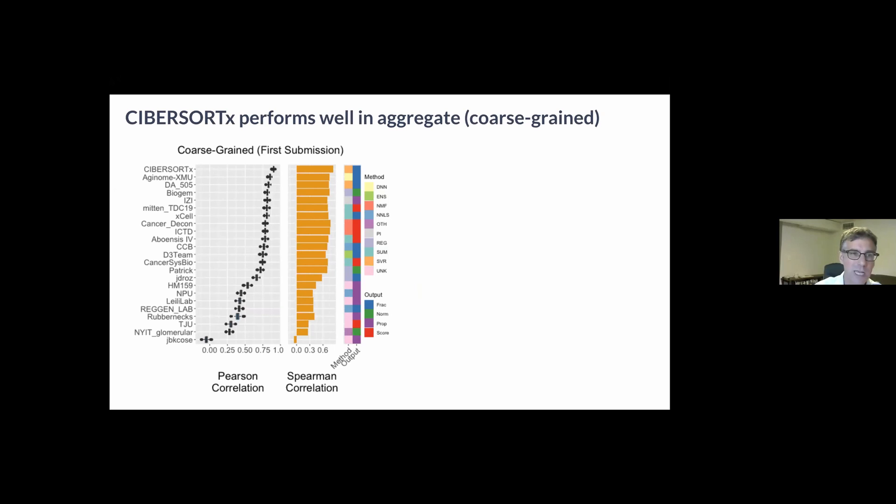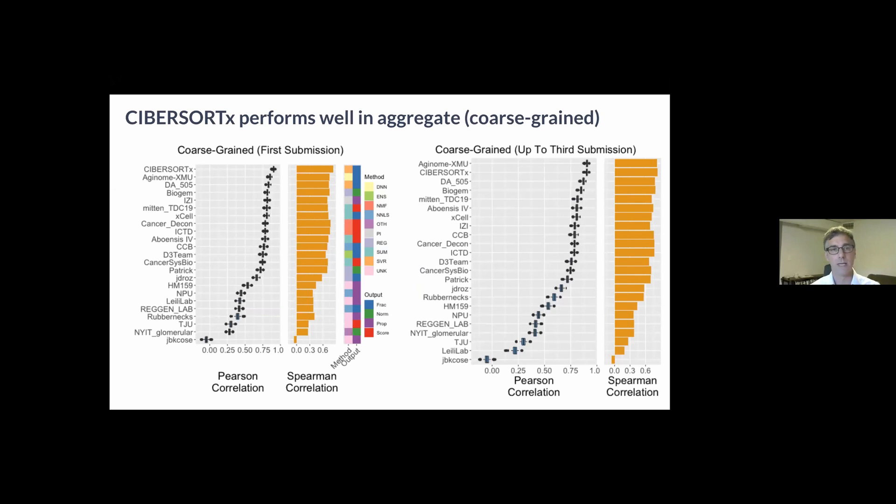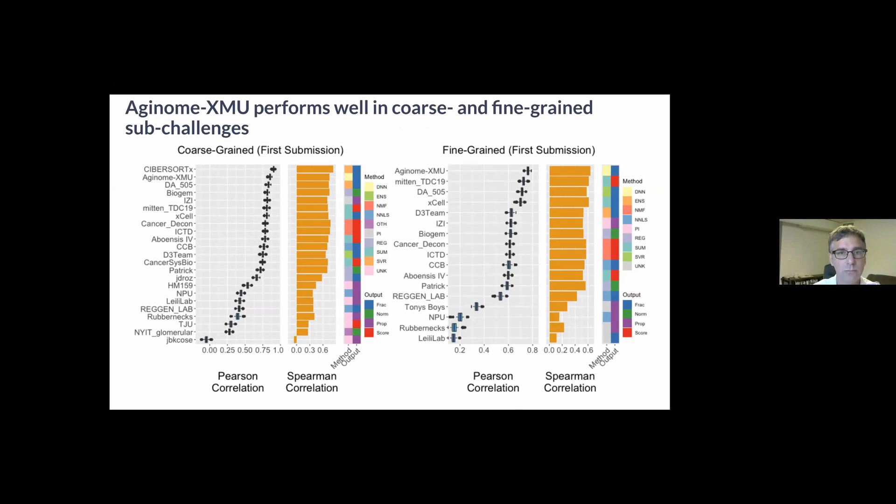We allowed participants three submissions as I mentioned, and following the first we found that CIBERSORTx performed best using our primary Pearson-based correlation metrics in this coarse-grain sub-challenge. In fairness to Rong Shan and others we did allow participants these three submissions, so at the final submission Axonome XMU, the method that Rong Shan described, was statistically tied with CIBERSORTx using the primary metric.